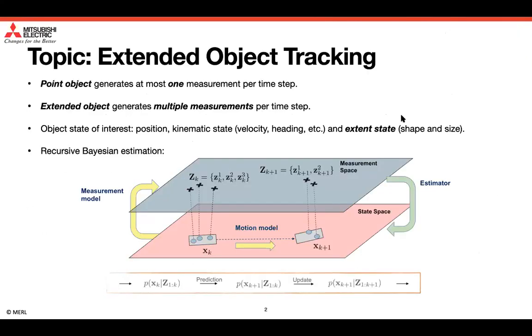The topic of this presentation is about object tracking, and more specifically extended object tracking. An extended object typically gives rise to multiple measurements per time step. This is a key difference compared to conventional point object tracking, which assumes that an object generates at most one measurement per time step. In extended object tracking, the object's state of interest usually not only includes the object's position and its kinematic state like velocity, acceleration, and heading, but also includes the extended state, that is the shape and size of the object.